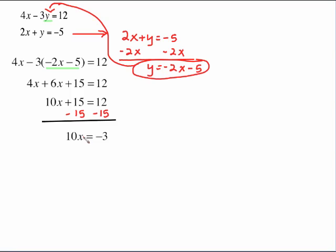Subtract 15 from both sides gives us negative 3, divide both sides by 10, and we have negative 3 tenths. It's entirely possible that you get a fraction answer and you'll just have to be able to deal with that.